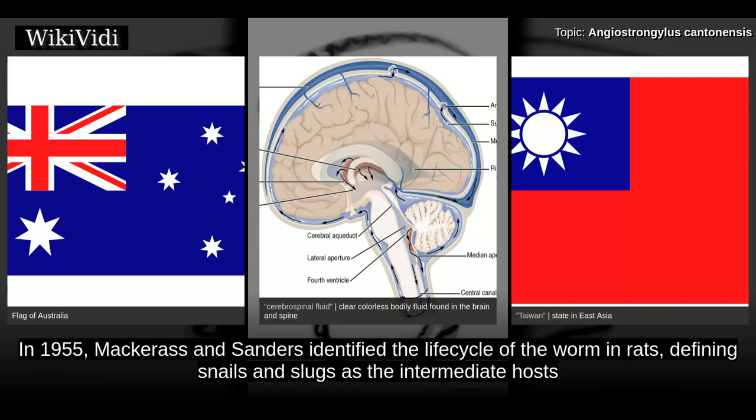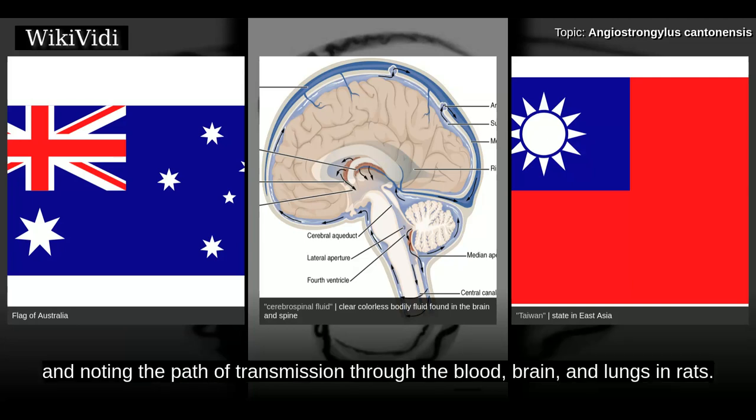In 1955, Macross and Sanders identified the life cycle of the worm in rats, defining snails and slugs as the intermediate hosts, and noting the path of transmission through the blood, brain, and lungs in rats.